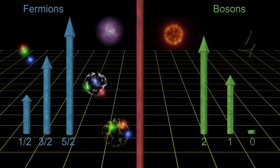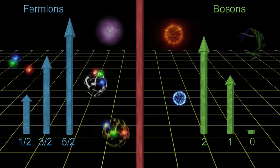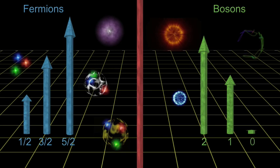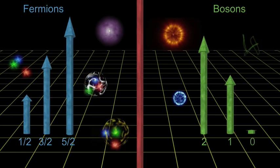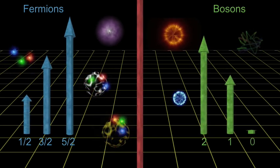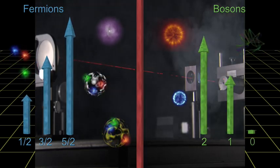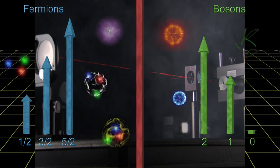Photons, gluons, gravitons, all fall into this family. If bosons had to obey the exclusion principle, many modern marvels could not exist. Like lasers, which require that huge numbers of photons be in the same state at the same time. And again, the universe would be a very different place.